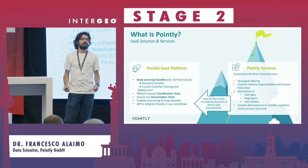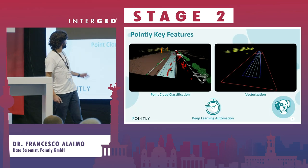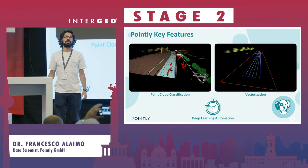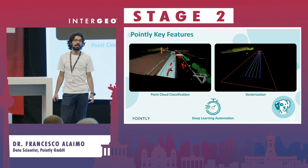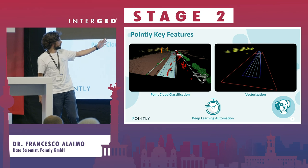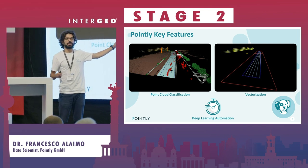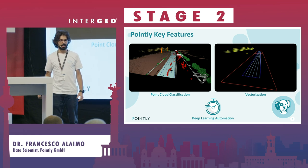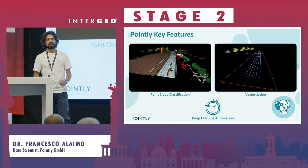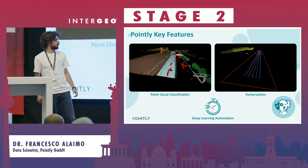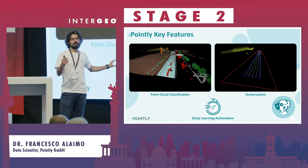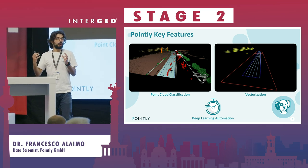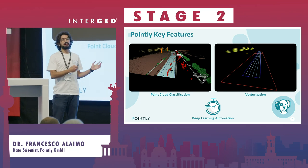What we have managed to do until now is automatic and manual annotation in the platform. You can see an example of a point cloud classification on the left, which is also how our web-based viewer looks. We also have vectorization — the ability to draw vector models on top of the point cloud. What I want to focus on for most of this talk is the deep learning automation. As a data scientist at Pointly, I've mostly been involved in developing the deep learning algorithms that automate these two processes.